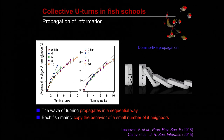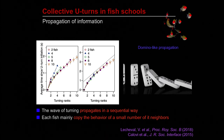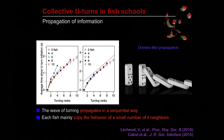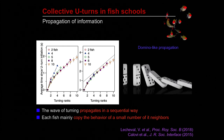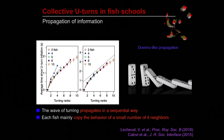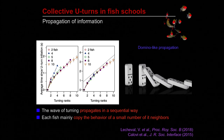So once a U-turn has been initiated, the wave of turning propagates in a sequential way, similar to a chain of falling dominoes in which the time interval between two successive falls is constant without any positive feedback. This suggests that each fish mainly copies the behavior of a small number of its neighbors.